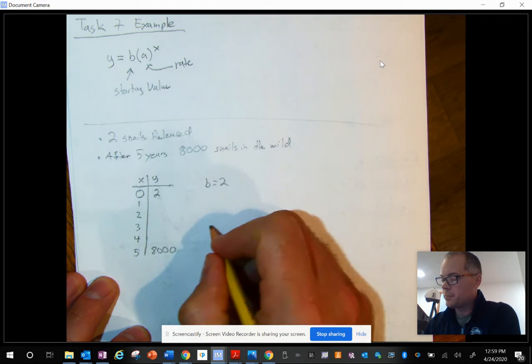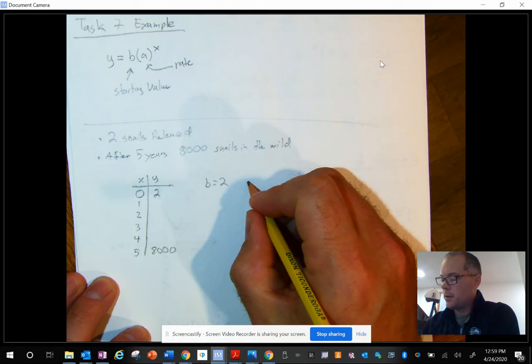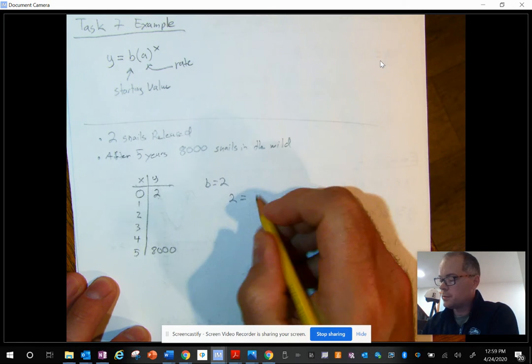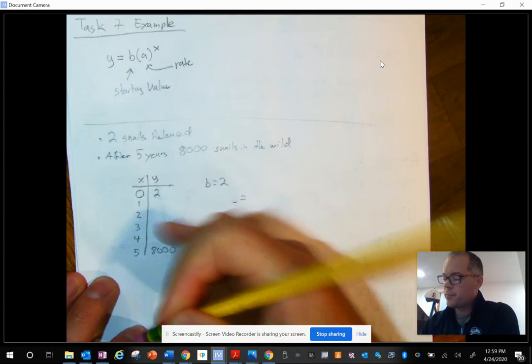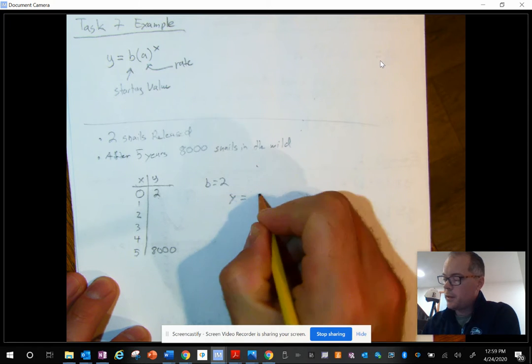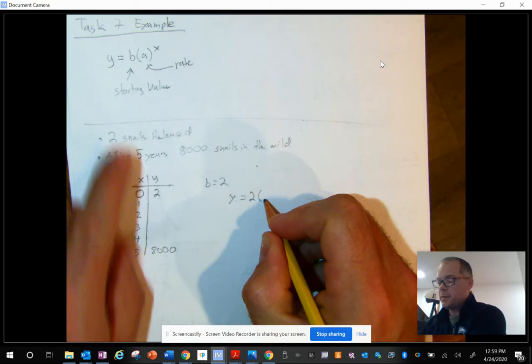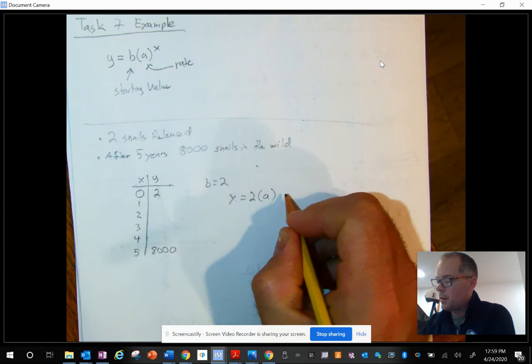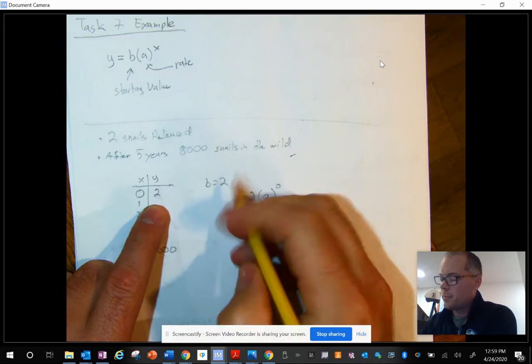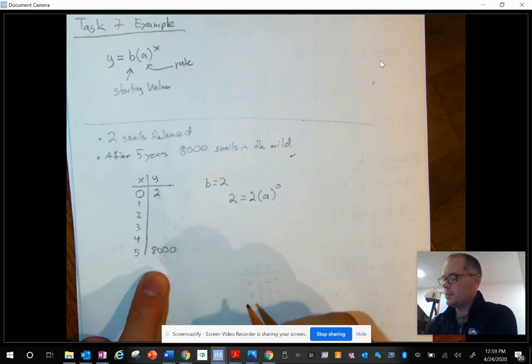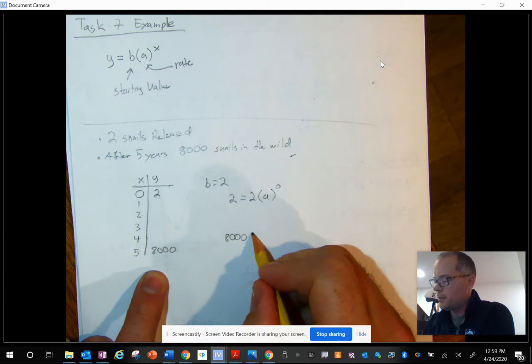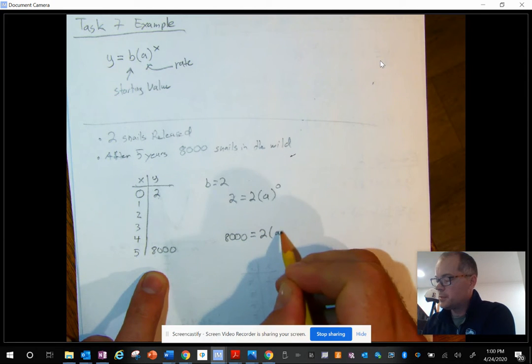So if I wrote this equation out right here, let's write them both out. So we're going to go Y equals two times, we don't know what this number is, we're just going to put an A there, A to the zero power. And we know that this equals two. Right? Pretty straightforward. This one down here, we're going to say 8,000 because that's where our Y is. Right? 8,000 equals two times A to the fifth.